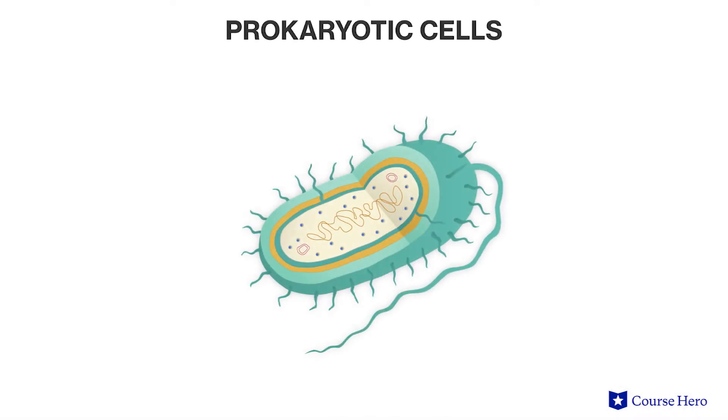The movement of mRNA out of the nucleus and its translation on the ribosome describes protein synthesis in eukaryotic cells, which contain a nucleus. In prokaryotes, organisms that do not possess nuclei, the same events of transcription and translation occur but with slight modifications. Since prokaryotic cells lack membrane-bound organelles, the entire process takes place in the cytoplasm.